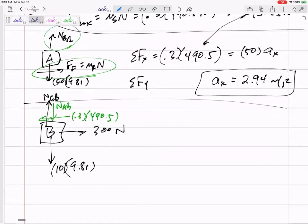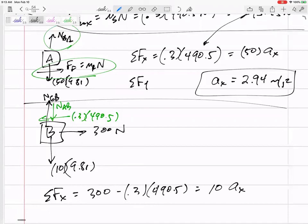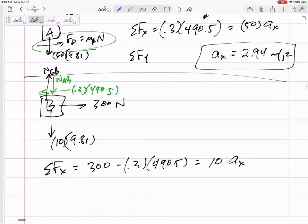And so now I can sum the forces in X. 300 minus 0.3(490.5) equals mass times, and notice I'm only looking at B. I'm only looking at the mass of B. Acceleration in the X, 15.3 meters per second squared.